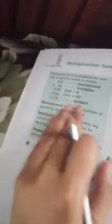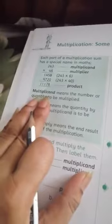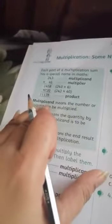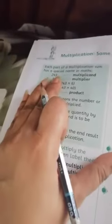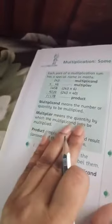The number you multiply by is called your multiplier. Then after the process, when we get our final answer, that is your product. Multiplicand means the number or quantity to be multiplied - the biggest amount that we have to multiply.